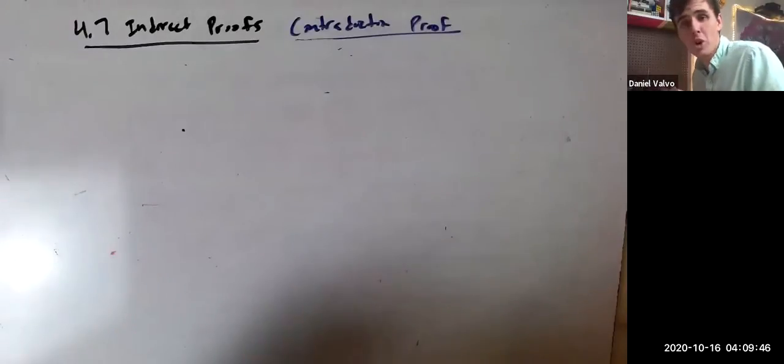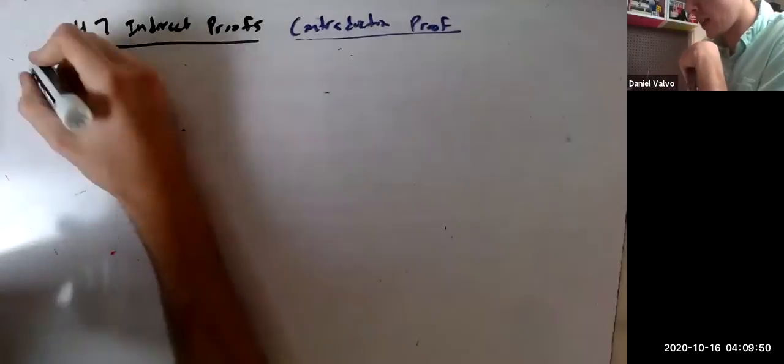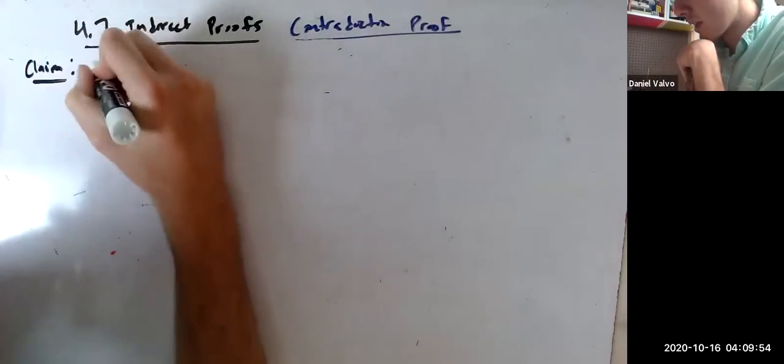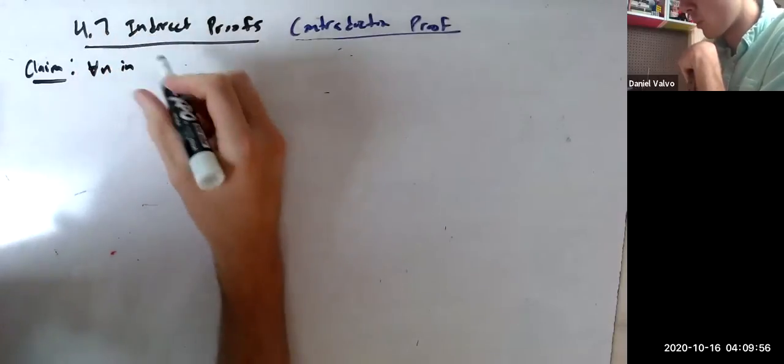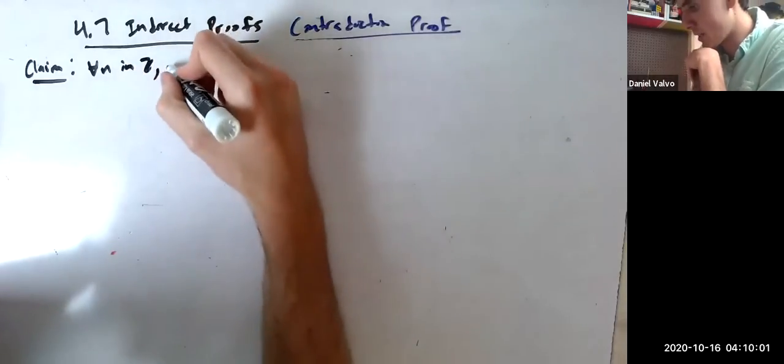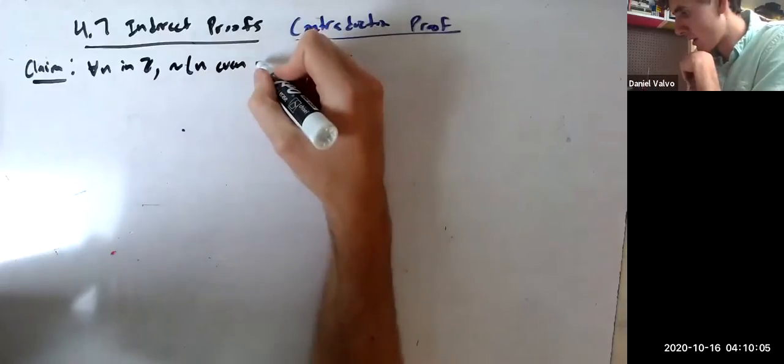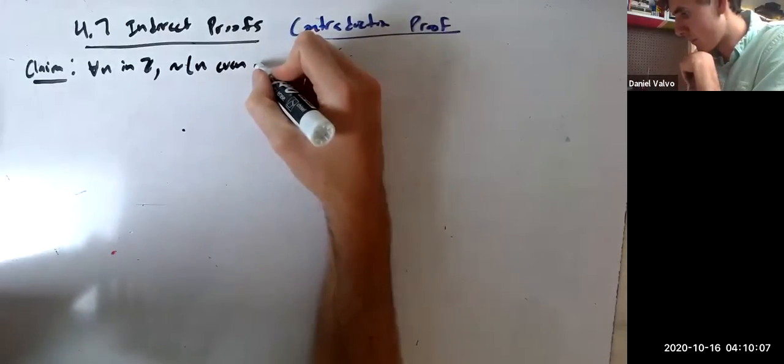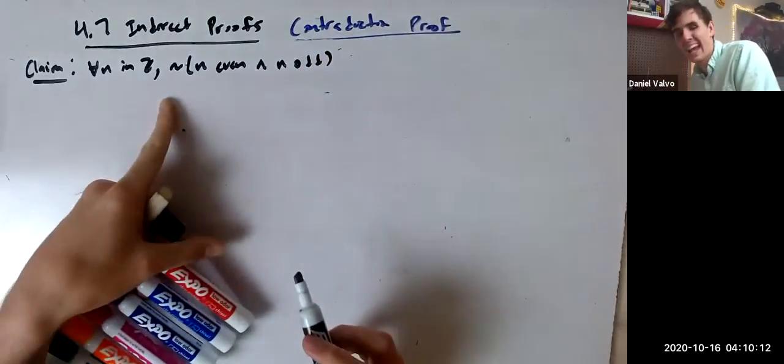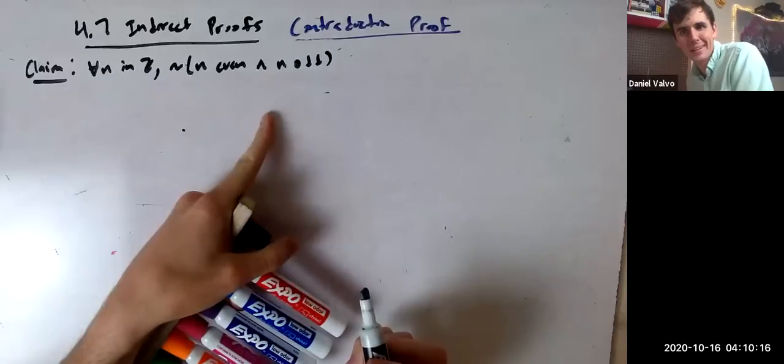Let's resume what we were trying to prove last time. We were trying to prove the claim that for all integers, for all N in Z, we can't have N as both even and odd.